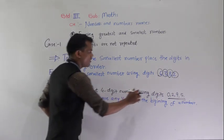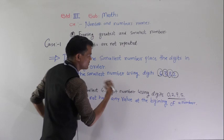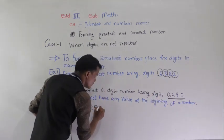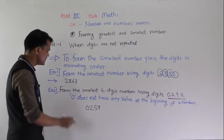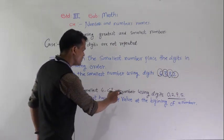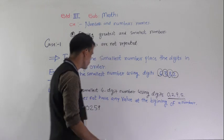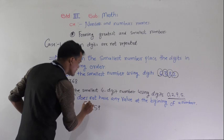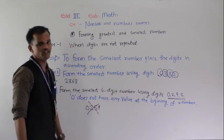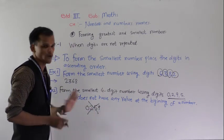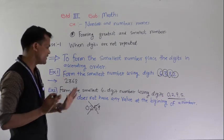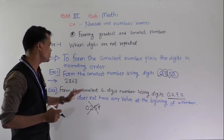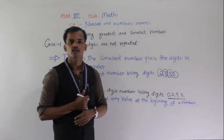Which is the smallest? 0. Then bigger than 0 — 2, then 5, then 9. But 0 does not have any value at the beginning of a number. If we read this number it becomes 259, which is not a 4-digit number — it is a 3-digit number. So it is wrong. We can't place 0 at the first position.